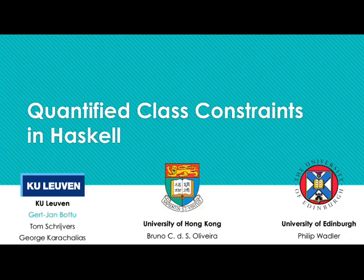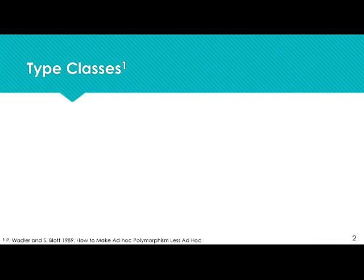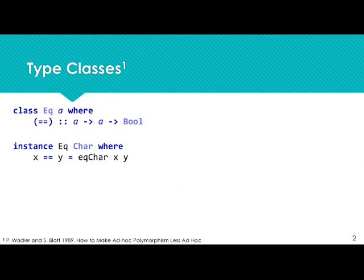As most of us know, type classes were first introduced by Wadler and Blott to introduce ad hoc polymorphism to the language. If you want to overload a certain function, you define a corresponding type class and introduce this function as a method to the class. Then each type which instantiates this class has to provide the implementation for this method — for instance, for characters or for booleans and so on.